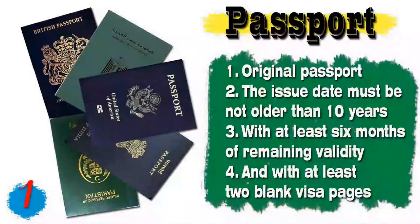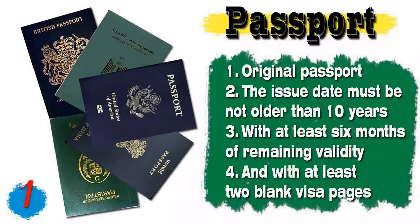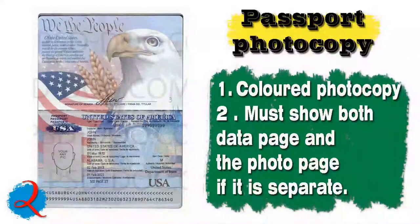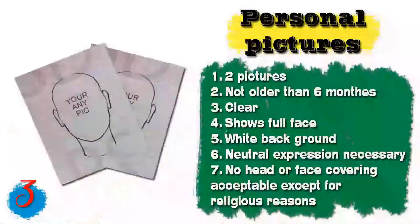Speaking about the documents needed to apply for the Bangladesh visa — or any visa — the first document is your passport. The passport must be original, the issue date must not be older than 10 years, with at least six months of remaining validity and at least two blank visa pages for stamps. Number two: you will need a photocopy of your passport, recommended to be in color, showing both the data page and the photo page.